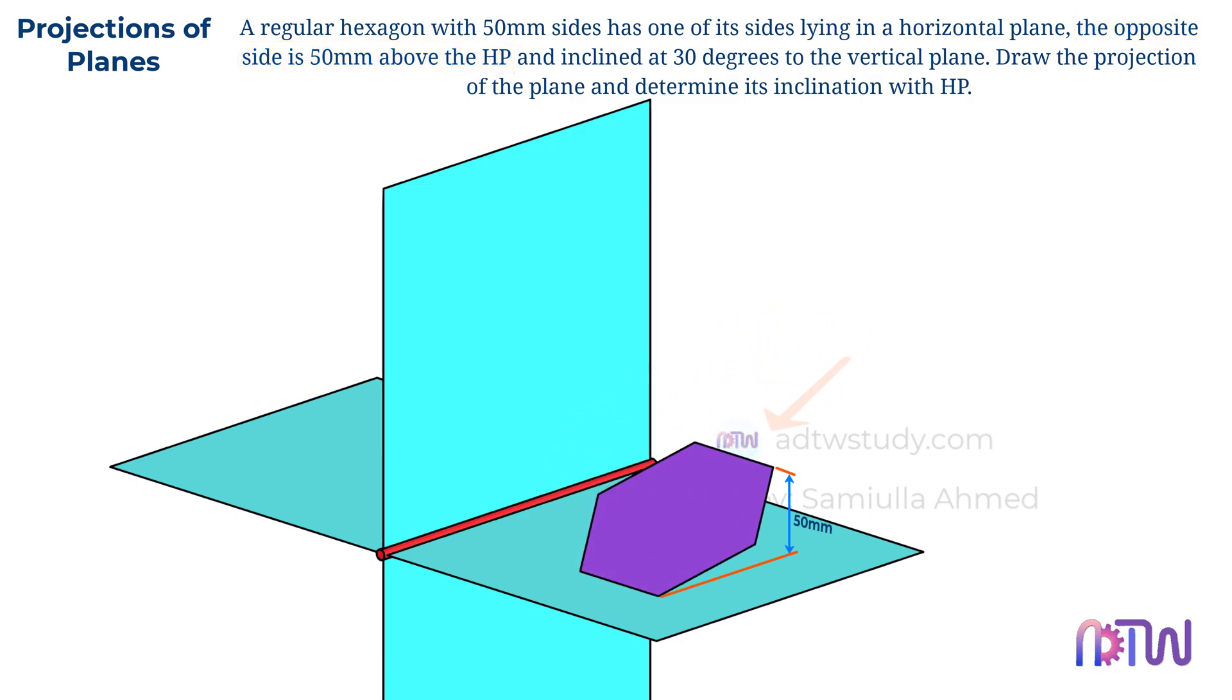Here we can see that instead of providing the angle made by the hexagonal plane, they have given us the height at which the other side is positioned.